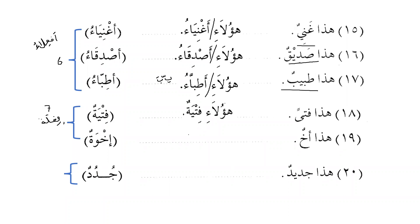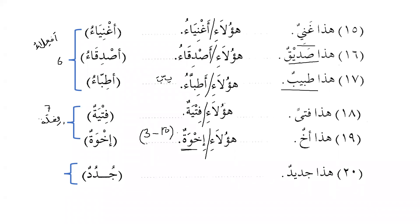Our focus in this lesson is the plural, not the dual. هذا أخ — this is a brother — becomes هؤلاء إخوة. The pattern فِعْلَة is used when the number is from 3 to 10, as in إخوة يوسف. If the number exceeds 10, we use إخوان. So أخ has two plurals: إخوة (3–10) and إخوان (more than 10).